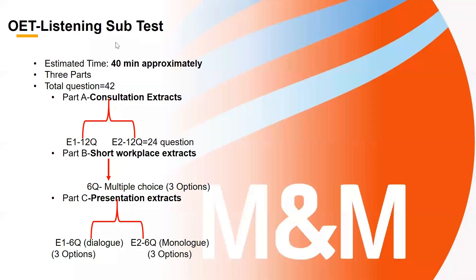The listening subtest is the first subtest of your OET exam. We have a total time of around 40 minutes, but depending upon the audio, we may have variety — in the exam we can have 30 to 45 minutes of audio. There are a total of three parts.